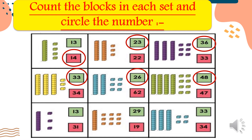One stick in tens and three small squares in ones — the number is thirteen. One stick in tens and nine small squares in ones — the number is nineteen. Three sticks in tens and four small squares in ones — four in ones and three in tens, so the number is thirty-four.